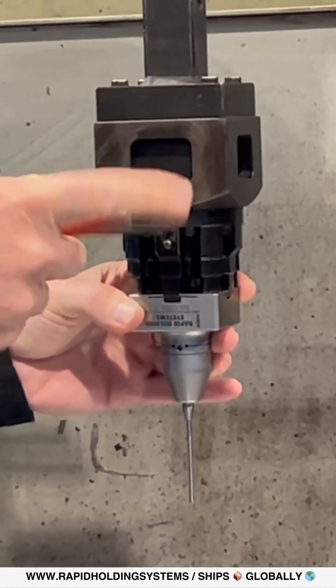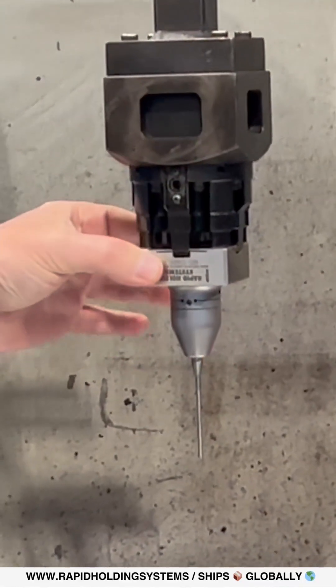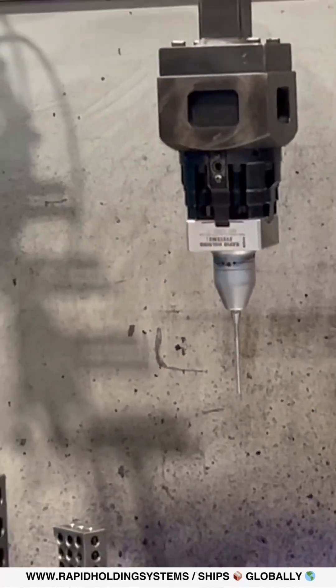It connects with a 3R chuck. Simply tighten the set screw. It's very secure. Now we're going to go ahead and probe our part.